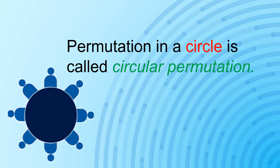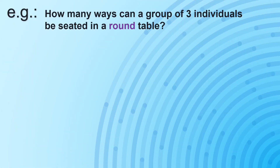Here is the explanation. We are asked to determine the number of arrangements — how many ways can three individuals be seated at a round table? So if we are to visualize the problem using the listing process, we can have the arrangement 1, 2, 3 — the clockwise arrangement.